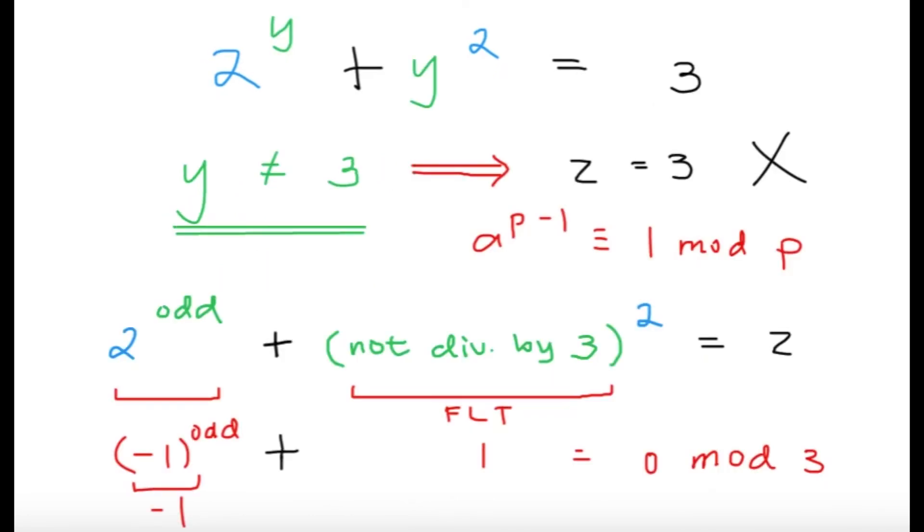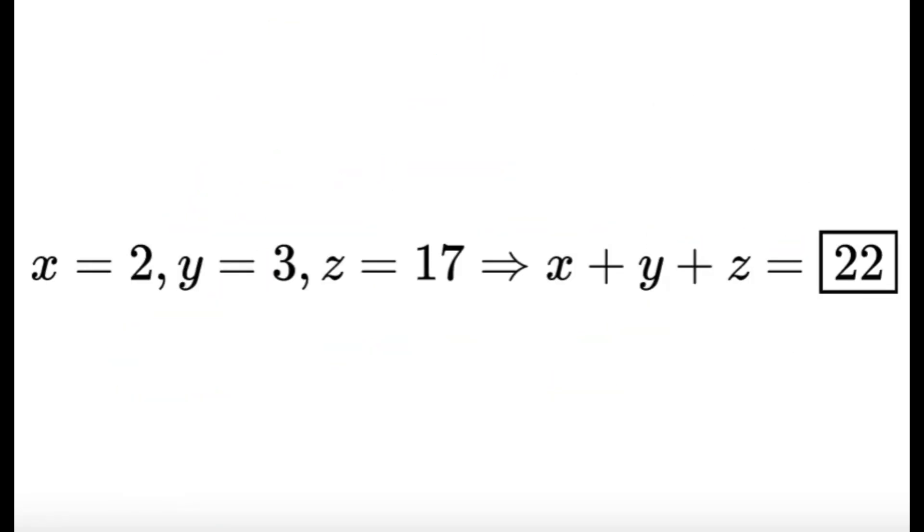So to conclude, we have x equals 2, y equals 3, and z equals 17. And that's going to give you x plus y plus z equals 22. And this will be our final answer. Hopefully, you guys learned something new from this video. And I'll see you in the next one. Bye-bye!